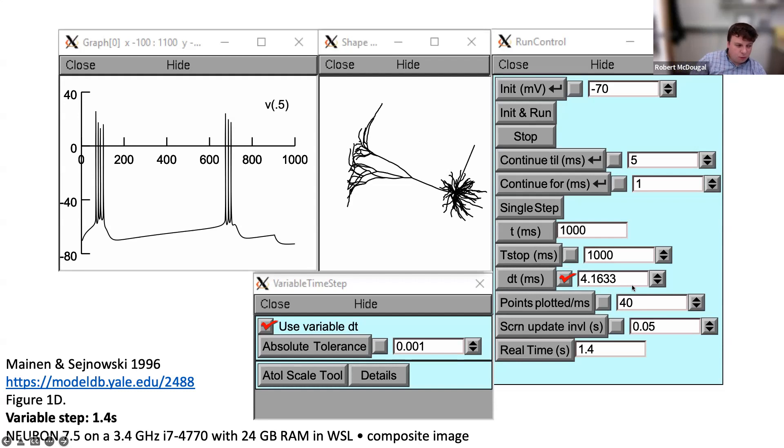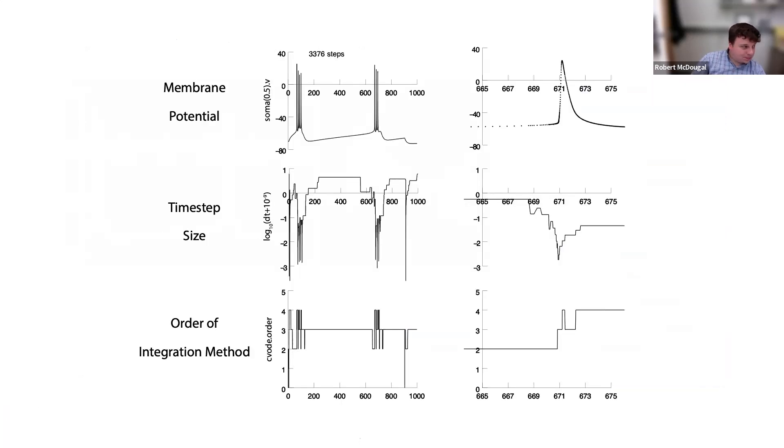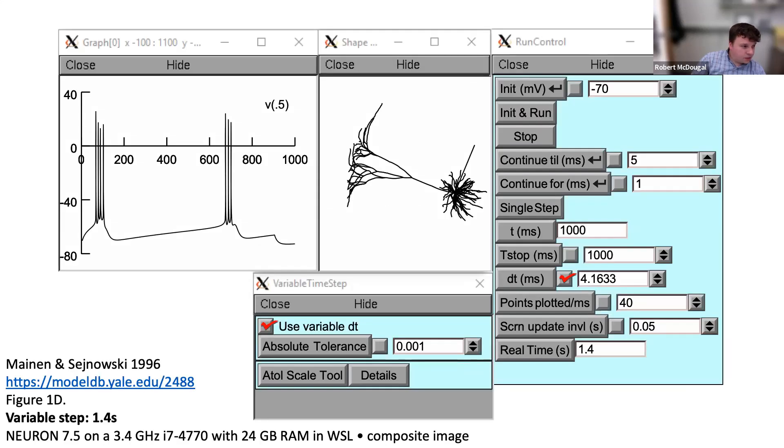You'll note my last advance was four milliseconds long, but I could do that because state variables had leveled off. It's not always going to give faster results though. Variable step usually won't be faster with networks because there's always stuff happening somewhere, and it's very particular about handling spike times exactly right. Don't do variable step integration to make things go faster—do it to constrain error.